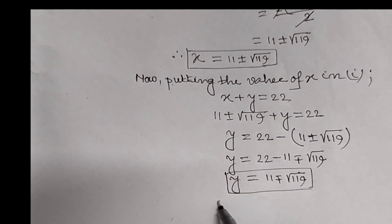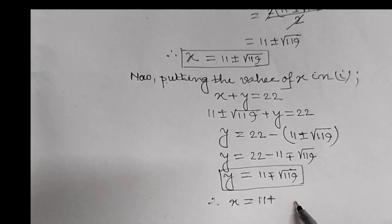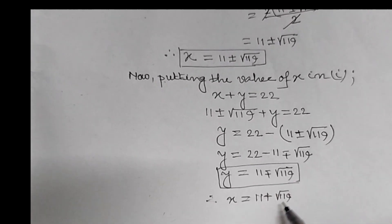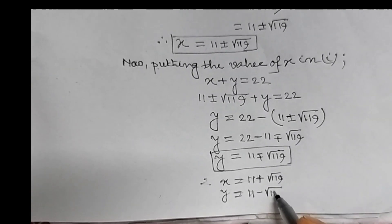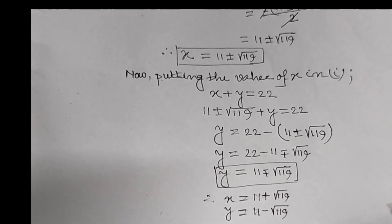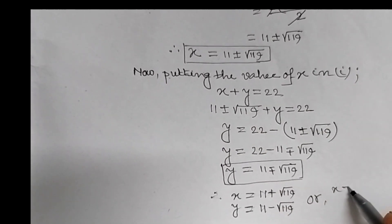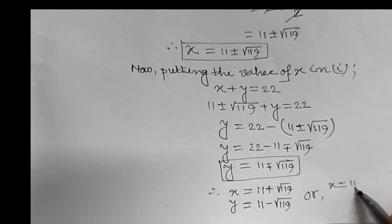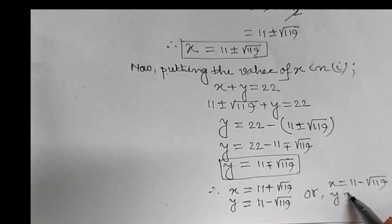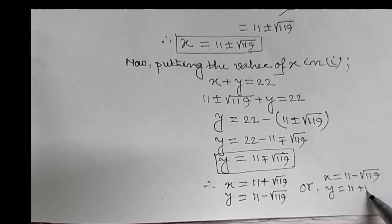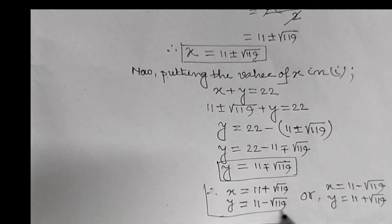Now, we can say: x equal to 11 plus root over 119 and y equal to 11 minus root over 119; or x equal to 11 minus root over 119 and y equal to 11 plus root over 119. This is the required two-set solution of the given equations.